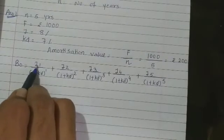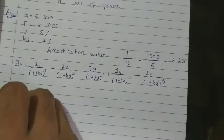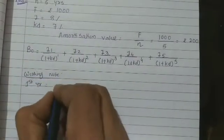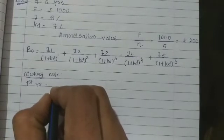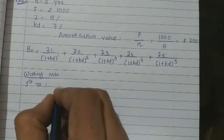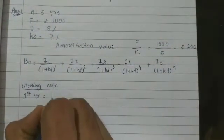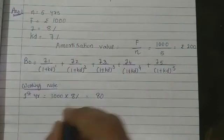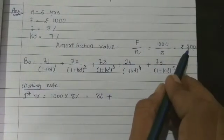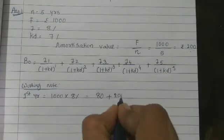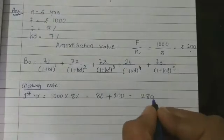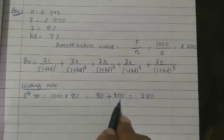In the bond amortization concept, the government pays some portion of the principal amount along with interest. For the first year: face value is 1000, so 8% interest = rupees 80, plus amortization value 200. Therefore at the end of the first year the government pays 80 + 200 = rupees 280.